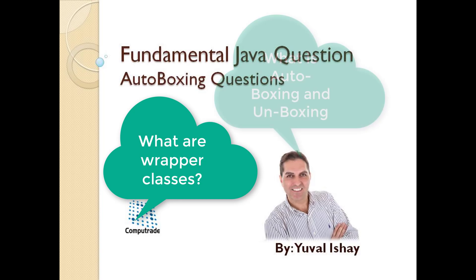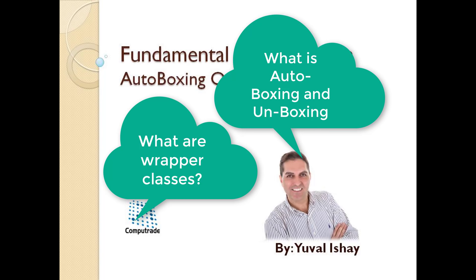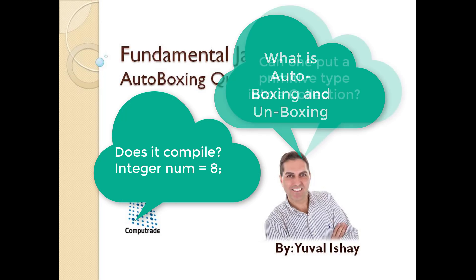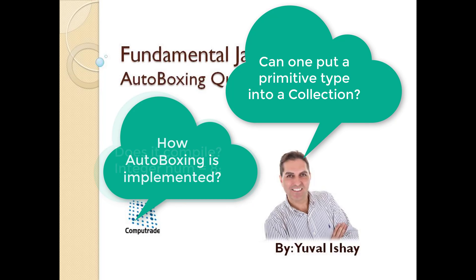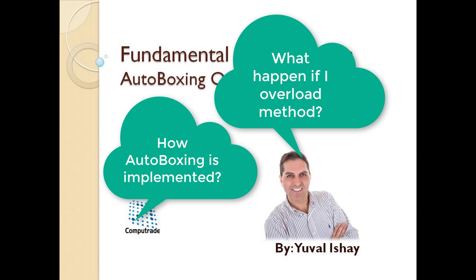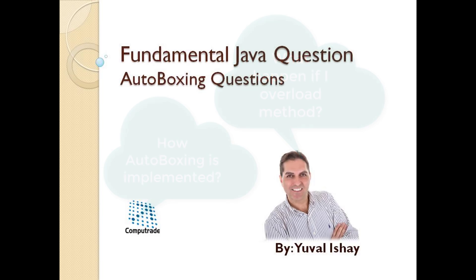What is the meaning of auto boxing and unboxing? Does the following code compile? Can one put a primitive type into a collection? How is auto boxing implemented? What happens if I overload a method with a primitive type and a wrapper class — does it compile, and what happens at runtime? Let's start by answering the first question, as it will give us a good background to understand the auto boxing feature. So what are wrapper classes?